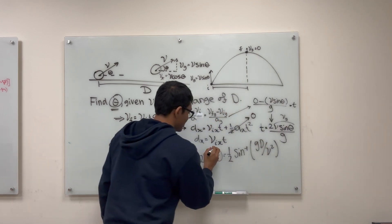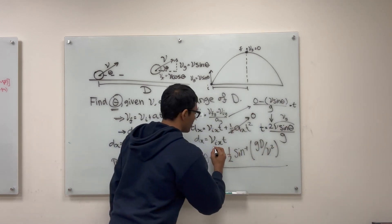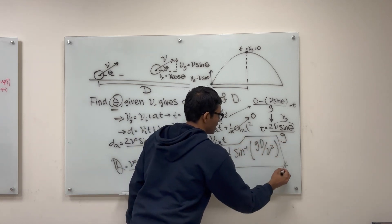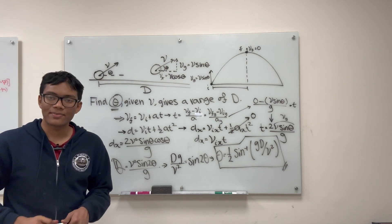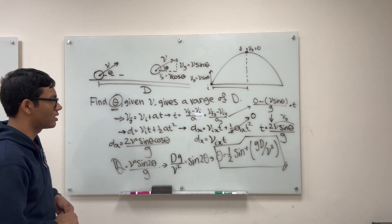So this is the angle theta, which helps our ball achieve a range of d. So let's go ahead and quickly recap what steps I did to solve this problem.